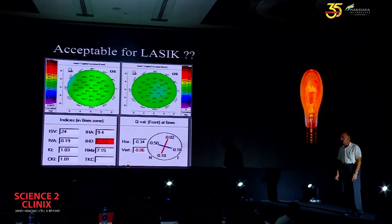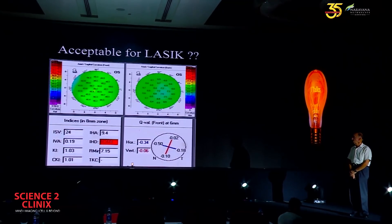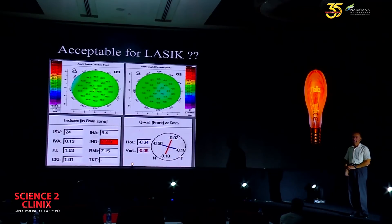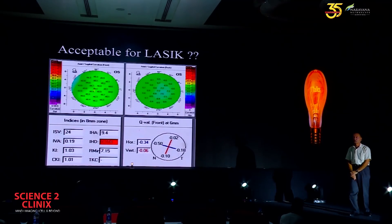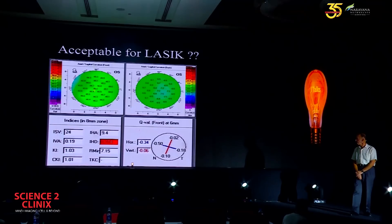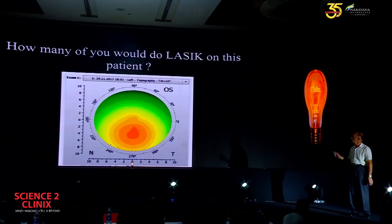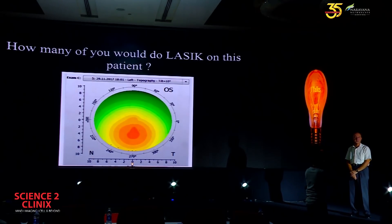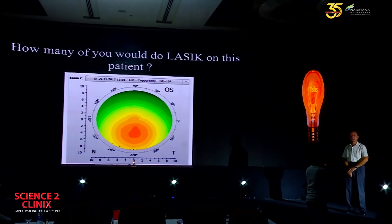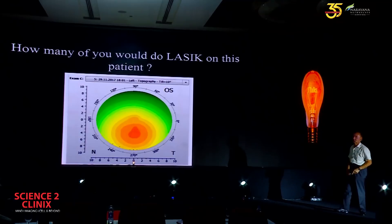How about this map? Again, the curvature maps, anterior and posterior, look completely normal. On the indices, we have one moderately abnormal IHD. How many of you would consider this an appropriate candidate? And how about the next one — how many of you would do LASIK on this patient? So only a few of us would.